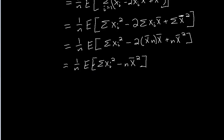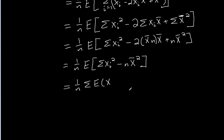Now I'm going to distribute out this expectation, and I'm going to reverse the order of the sum and the expectation. That's linearity of expectation. The linearity of expectation says that if we have the expectation of a sum, we can distribute it out to the individual terms — and that works inside a summation denoted by sigma like this too. So I have 1 over n times the sum of the expectation.